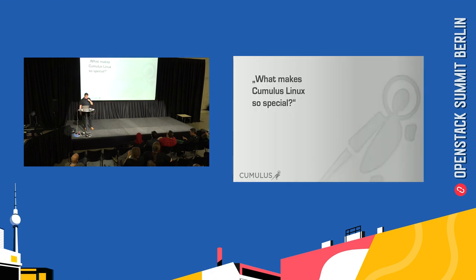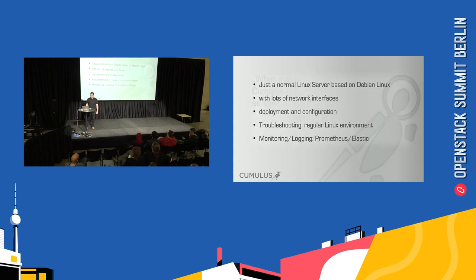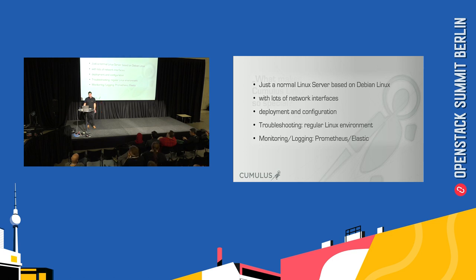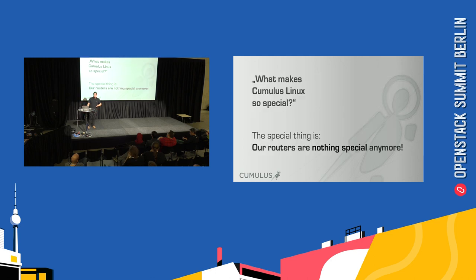Coming back to Cumulus: what makes Cumulus Linux so special? It's a normal Linux server based on Debian Linux — it looks like a server with lots of network interfaces and nothing more. Deployment and configuration can be done with the same tools, and you have a regular Linux environment for troubleshooting, monitoring, logging, Prometheus and Elasticsearch — the same as you'd use with a server. The special thing about Cumulus for us is that the routers are nothing special anymore. They are just servers. That's the key message to take home.